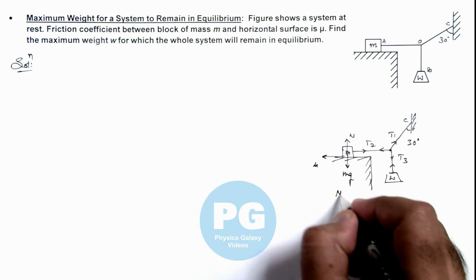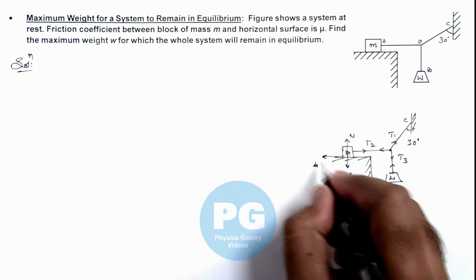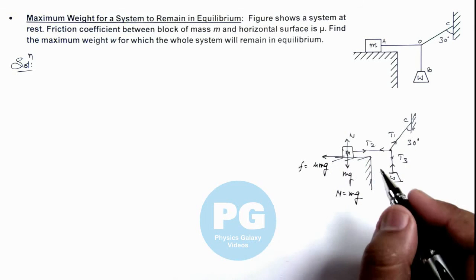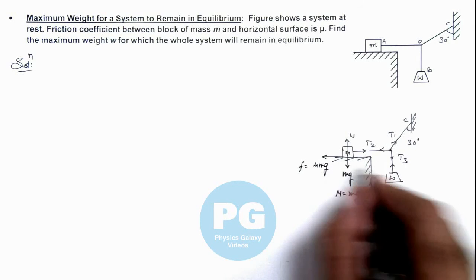And as the value of n here is mg, we can write the value of friction acting on the block will be mu mg in the case of limiting equilibrium, or when it is just about to slide.